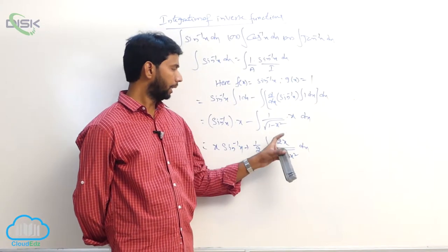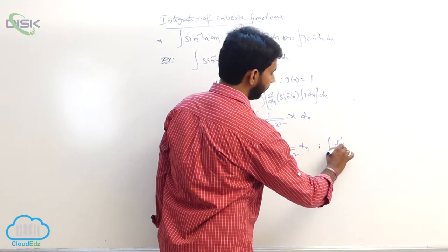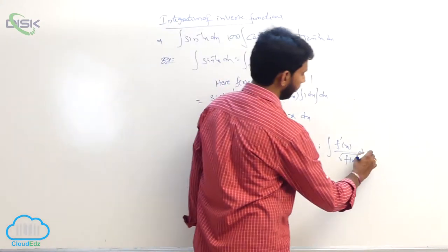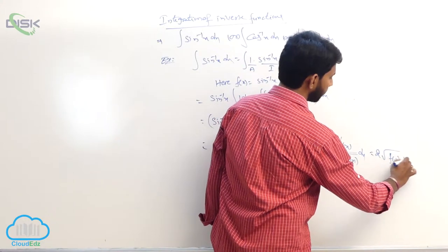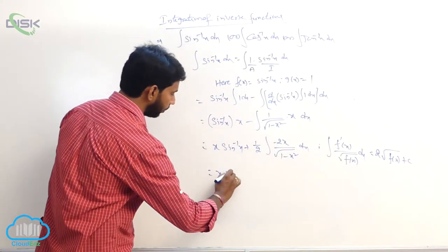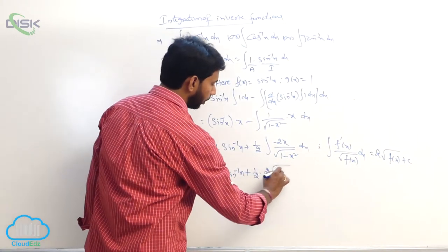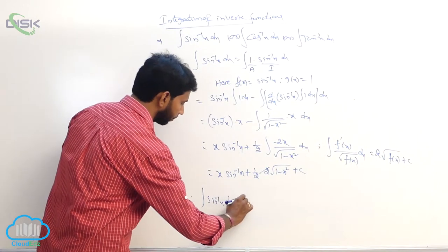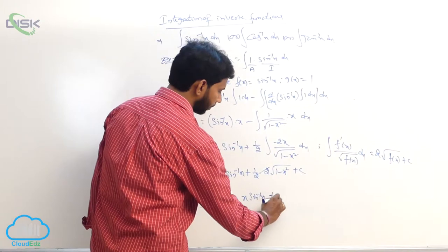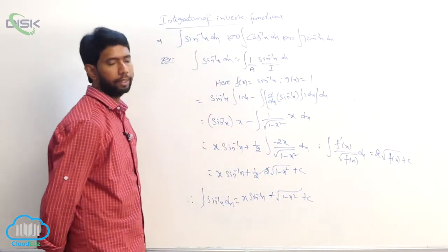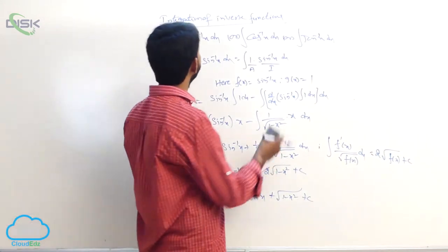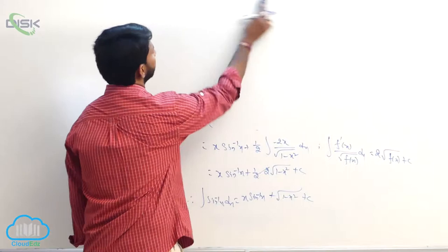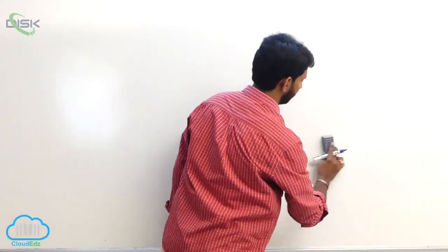The second term is of the form integral of f dash x by root f of x. Multiply and divide by minus 2: x sin inverse x plus 1 by 2 into integral of minus 2x by root of 1 minus x square dx. Applying the formula integral of f'(x) by root f(x) dx equals 2 root f(x), we get x sin inverse x plus root of 1 minus x square plus some constant.